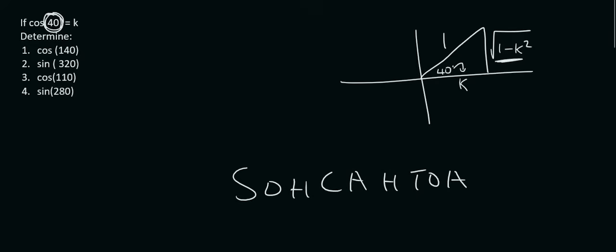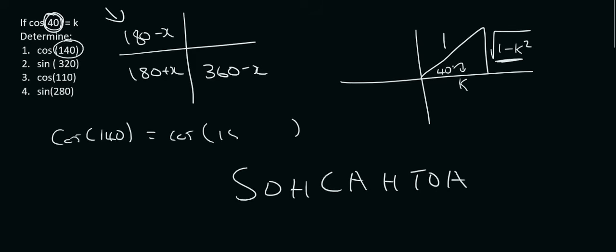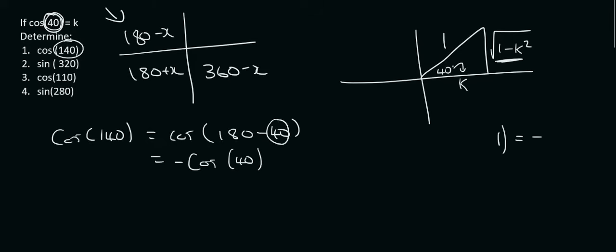So now we can get started. We'll do cos 140. So remember, whenever an angle is larger than 90, you want to reduce it first. So you want to write it as either 180 minus something, 180 plus something, or 360 minus something. So 140 would be in this quadrant. So we could say that the cos of 140 is the same as the cos of 180 minus 40. And so we know that in that quadrant, it just becomes the cos of x, or in this case it's 40. But cos is negative in that quadrant, so we'll put a little negative in the front. So we know now that cos of 140 is the same as the negative of cos 40. And we know that cos 40 is equal to k. So number 1's answer will just be negative k.